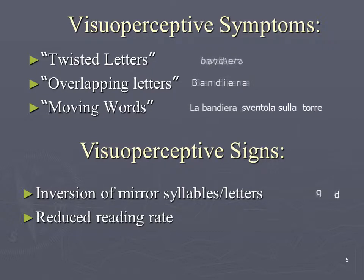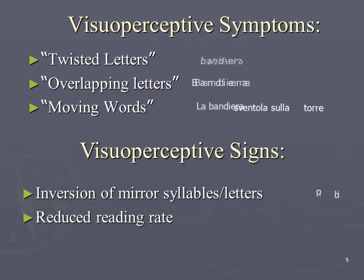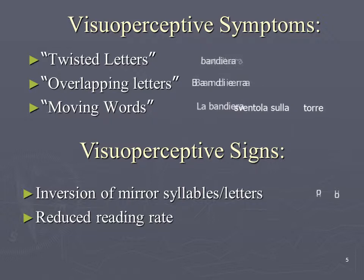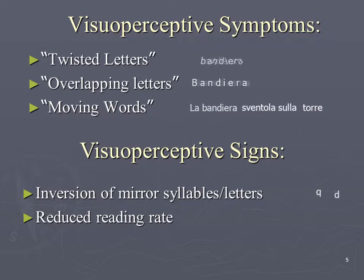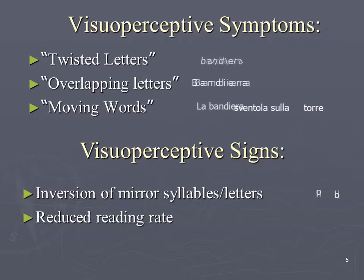This finding is predictable, considering that when reading, letters have to be correctly perceived and processed before their conversion into phonemes takes place. Clearly, the perception and processing of letters is provided by the visual channel.